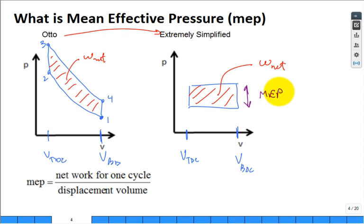So you can think of a couple of ways. The mean effective pressure times what is this difference in volume? That's my displacement volume, is equal to the net work. I could put it on a per unit mass basis, just make this a lowercase and lowercase.